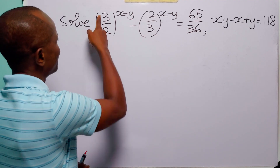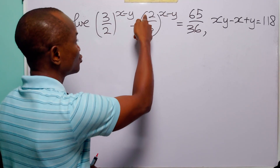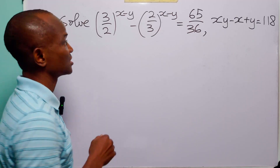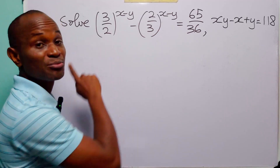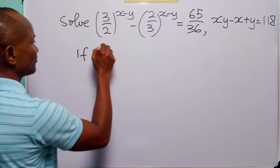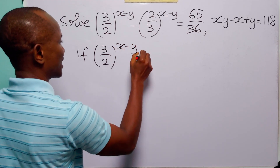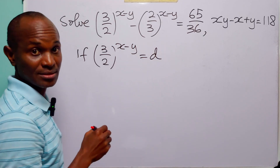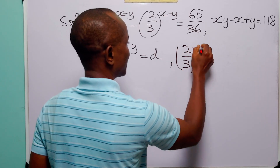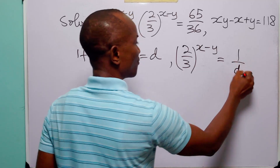You can see that here we have 3 over 2 to the power x minus y, while here we have 2 over 3 to the power x minus y. You can immediately see that this is a reciprocal of this. So if 3 over 2 to the power x minus y is equal to d, then 2 over 3 to the power x minus y is going to be 1 over d.